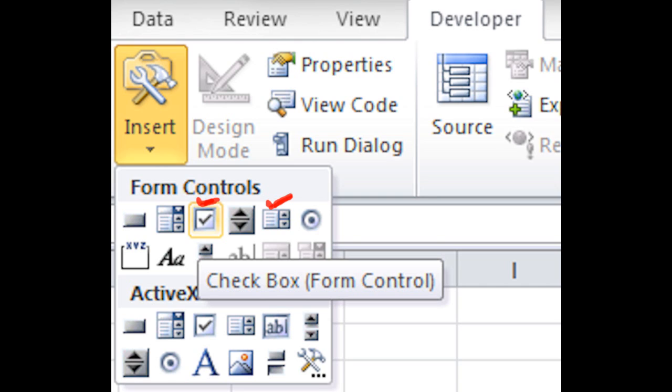The Insert drop-down menu, click on that. It has a wrench and hammer over a toolbox. Once you click on it, it'll open up the form controls. The very top row is what we want. We want the third control and the fifth control, and as you can see, I have two red checkmarks over both of those.